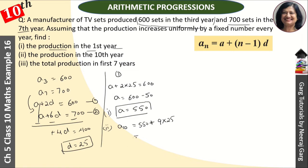So we have 550 + 9 × 25 = 550 + 225 = 775.